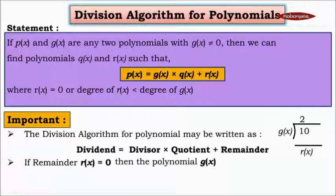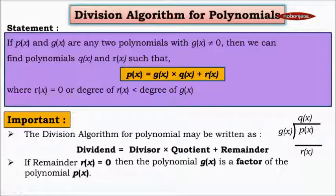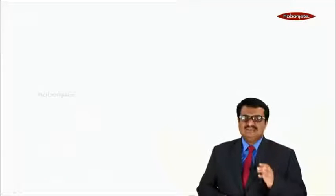If the remainder r(x) equals 0, then the polynomial g(x) is a factor of the polynomial p(x), where g(x) is the divisor, p(x) is the dividend, q(x) is the quotient, and r(x) is the remainder. So in simple words, it is nothing but: dividend equals divisor into quotient plus remainder.